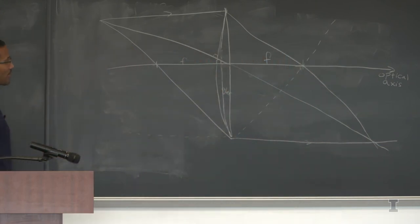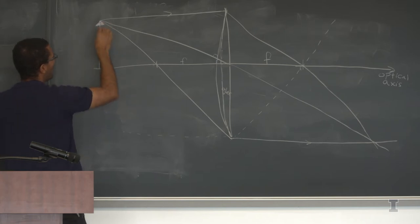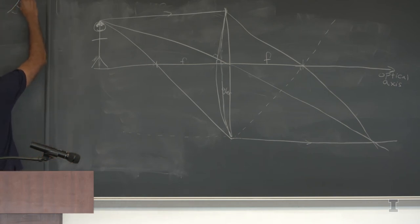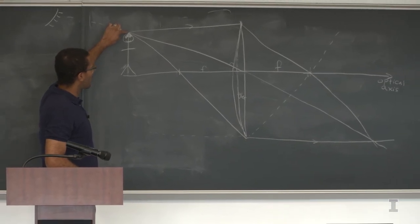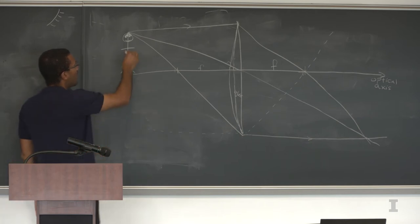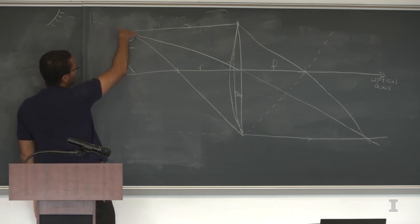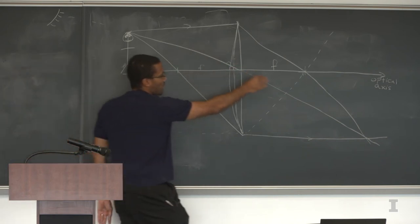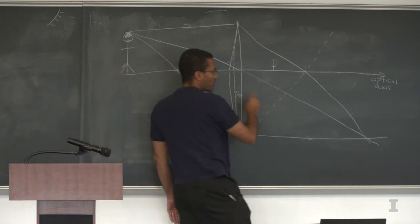These three rays are drawn for a specific reason. If I have an object — in optics you draw it as an arrow, let's say a person — light rays emanating from the top of that person will follow these three trajectories. One ray parallel to the optical axis, one through the center, one through the focal point. The place where all three rays meet on the other side is where the image is created.